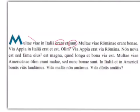There were and there are, subject complement, many roads in Italy. Many Roman roads were good. The Via Appia was and is in Italy. Once the Via Appia was a Roman road, now it is not new.